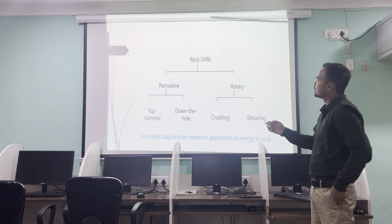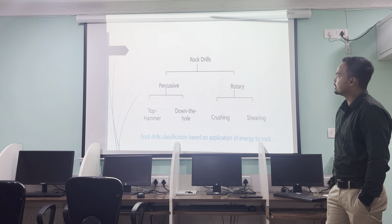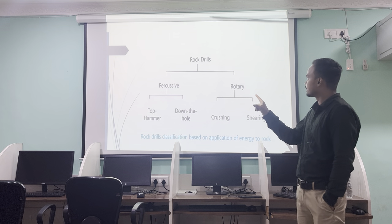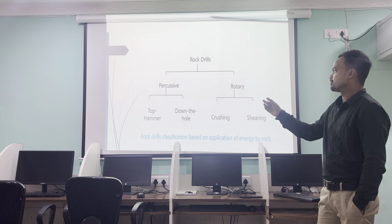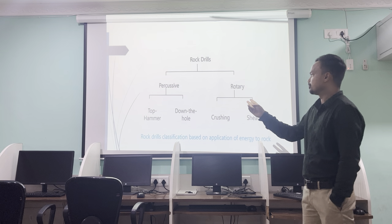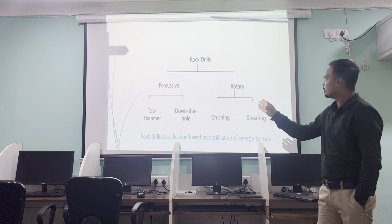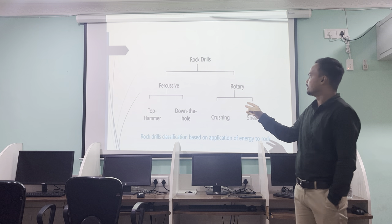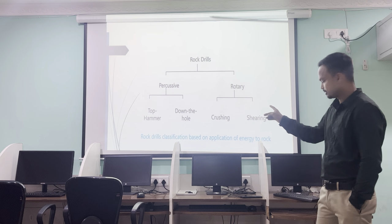This is the flow chart of a rock drill, which is divided into two types: percussive and rotary. In percussive, there are also two sub-types called top hammer and down hammer. In rotary, it is also divided into two types: first is crushing and second is shearing.